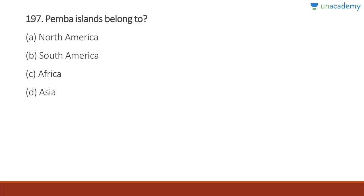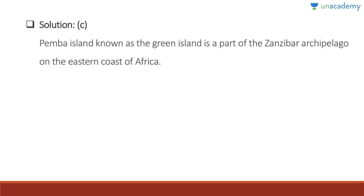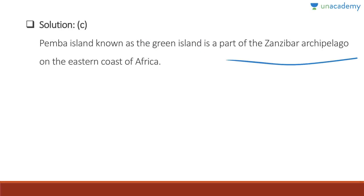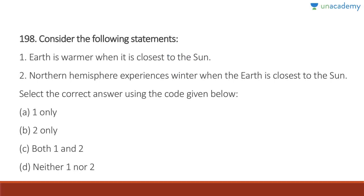Question 197: Pemba Island belongs to Africa. It is known as the Green Island and is part of the Zanzibar Archipelago on the eastern coast of Africa. Answer is C.